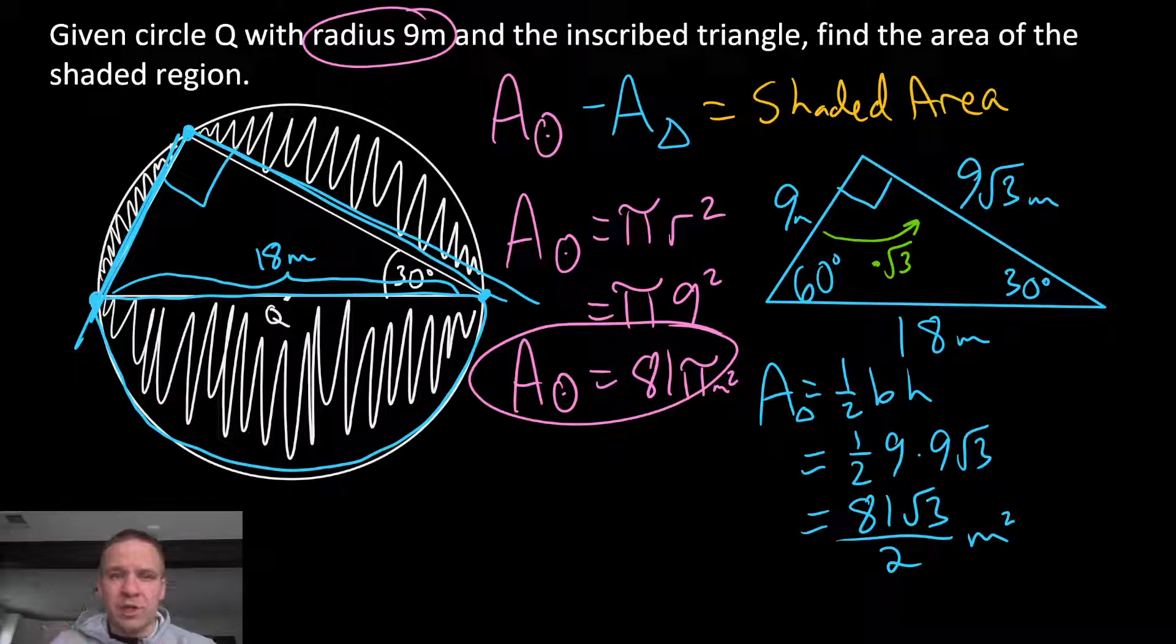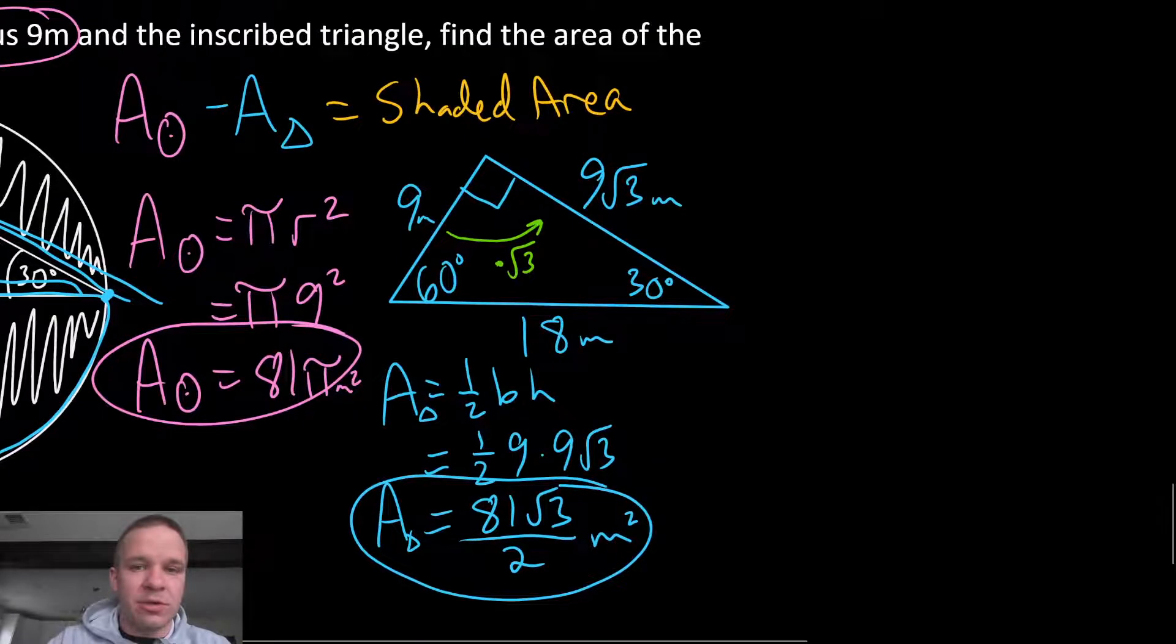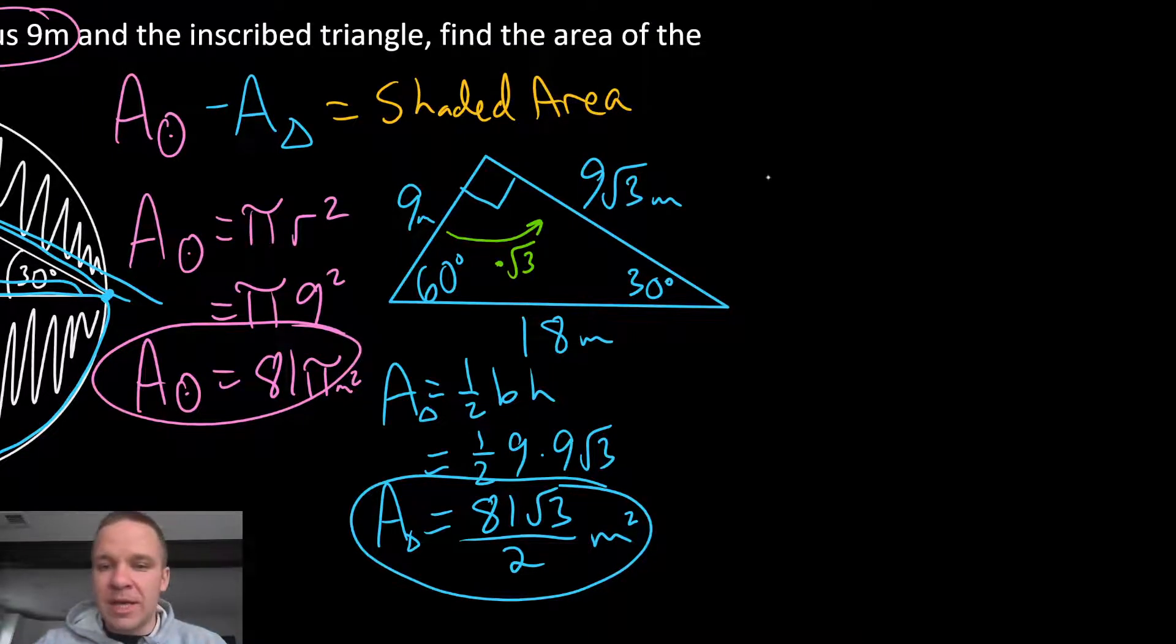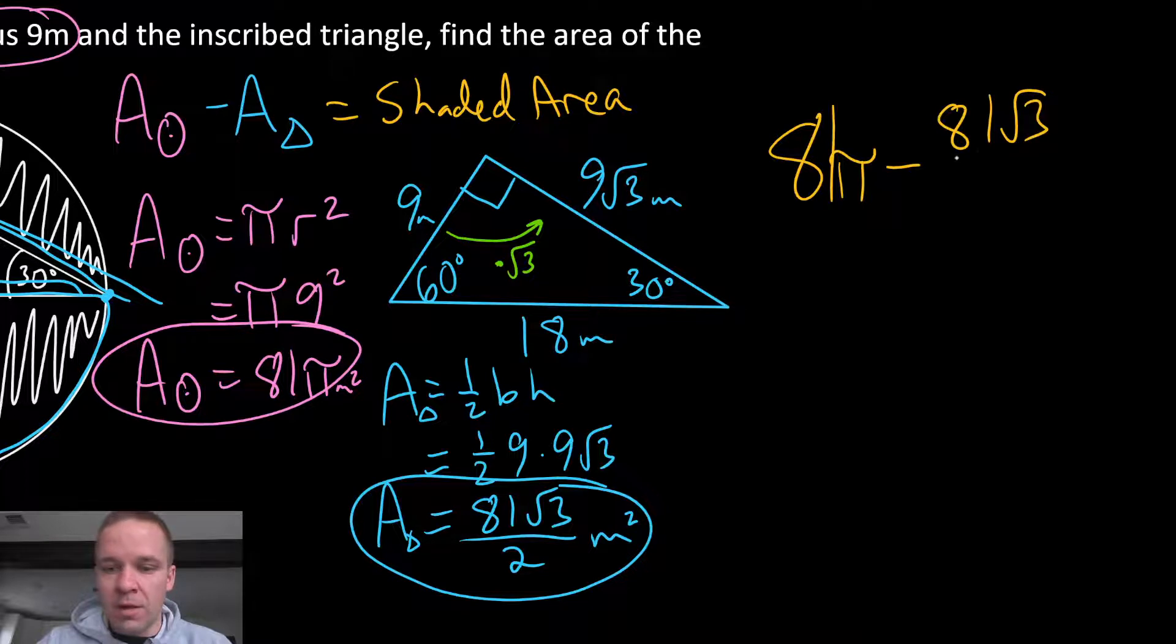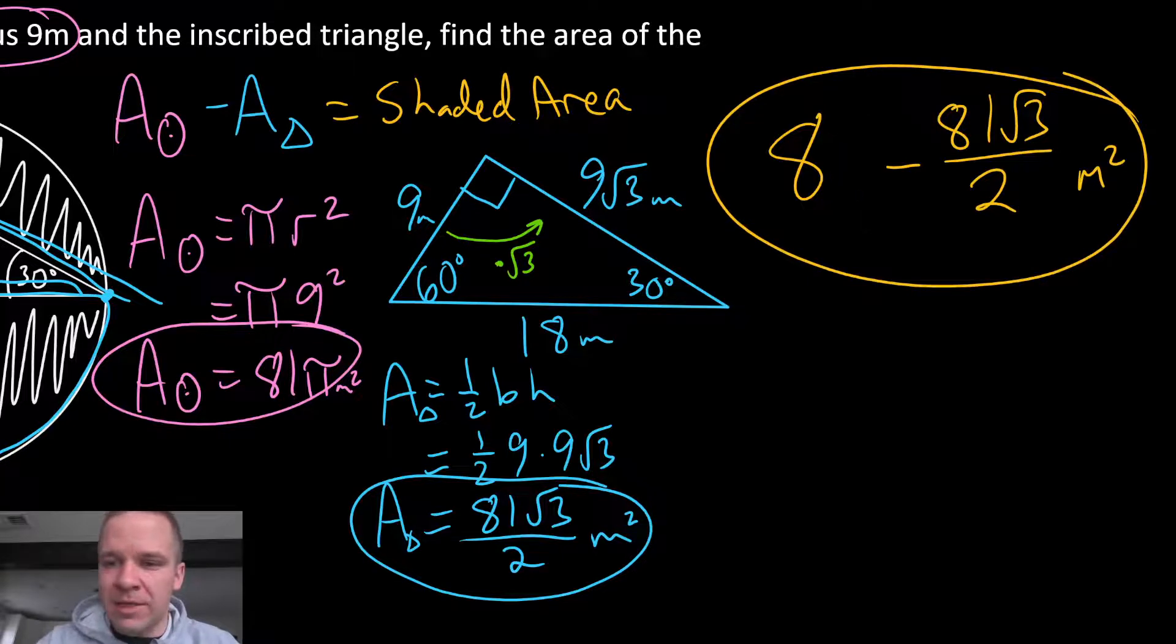Alright. So area of the shaded region. What am I gonna do with these two things? Well, this is my area of the triangle, and I've got my area of that circle. Let's scooch over so we have some room. I'm gonna take the area of the circle, which is 81 pi, and I'm gonna subtract the 81 root 3 over 2, and I will get meters squared. Final answer. That 81 pi is a little bit scrunched there. I like that a little better. There it is.